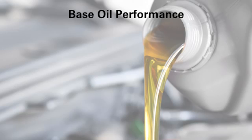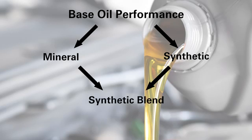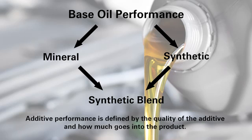First, we need to understand how engine oil is made. It starts with the right balance of base oils and additives. Base oil performance is typically divided into two categories: mineral or synthetic, or a combination of the two called synthetic blend. Additive performance is defined by the quality of the additive and how much goes into the product. Selecting the right combination of base oil and additive is the ultimate challenge.